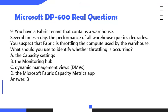Question 9. You have a Fabric tenant that contains a warehouse. Several times a day, the performance of all warehouse queries degrades. You suspect that Fabric is throttling the compute used by the warehouse. What should you use to identify whether throttling is occurring? A. The Capacity Settings. B. The Monitoring Hub. C. Dynamic Management Views (DMVs). D. The Microsoft Fabric Capacity Metrics app. Answer: D.